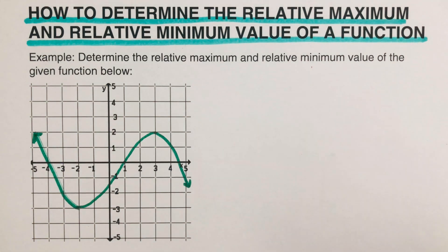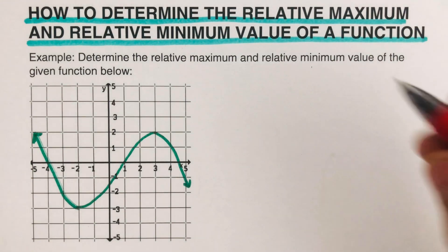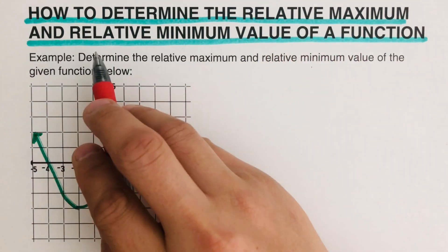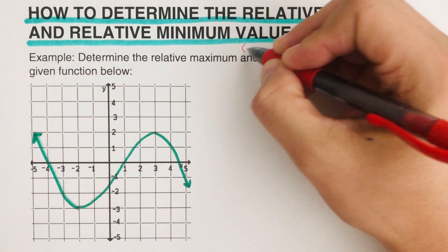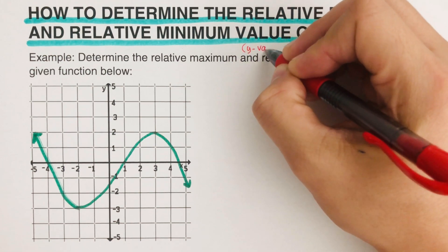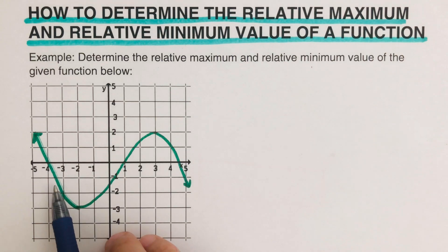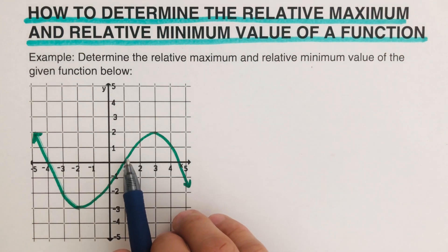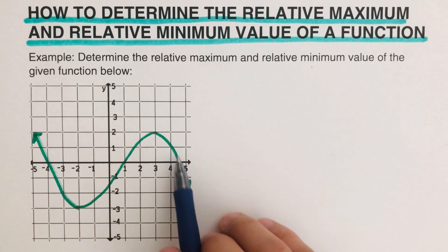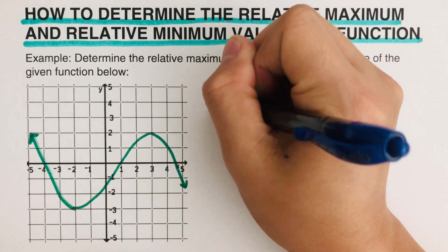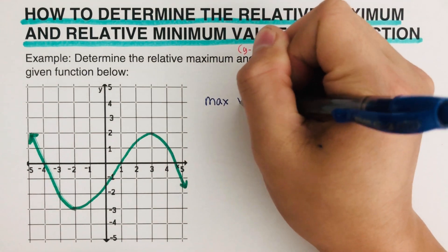So let's take this first example right here. We're going to determine what is the relative maximum value and the relative minimum value for this. Please remember that the value we're referring to — for both relative maximum and relative minimum — is the y value. As you can see, this is the valley and this is the hill. I'm going to write the max value for this.